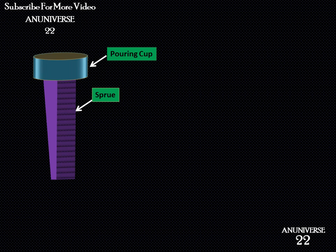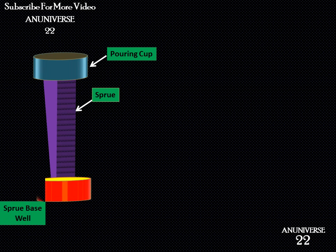The sprue is the vertical portion and is the channel through which molten metal is brought down to the parting plane, where it enters the runners and gates. Sprues are conical in shape because molten metal moving from the top of the cope to the parting plane gains velocity, requiring a smaller cross-sectional area at the bottom. The sprue base well is a reservoir at the bottom of the sprue to reduce the momentum of the molten metal.